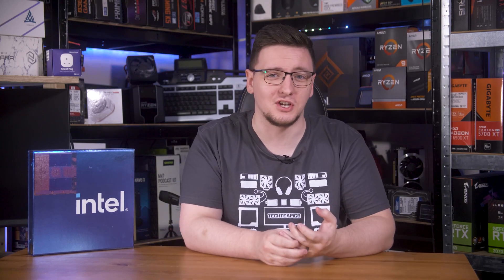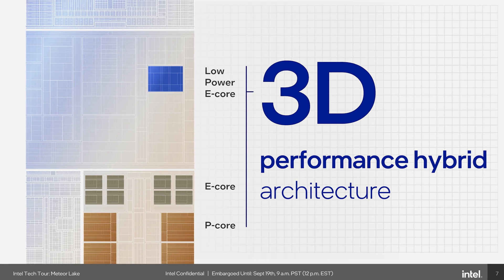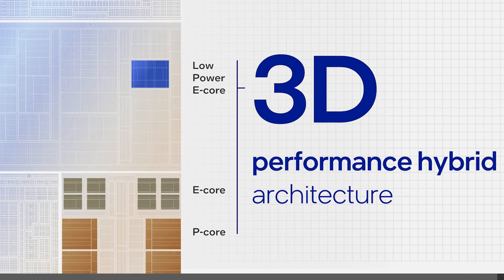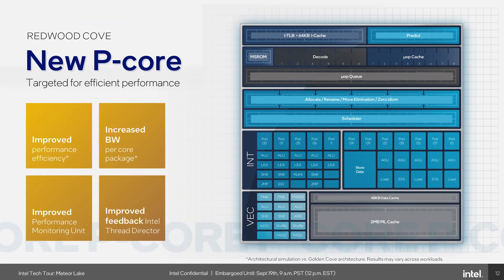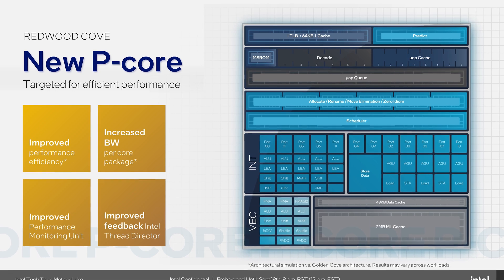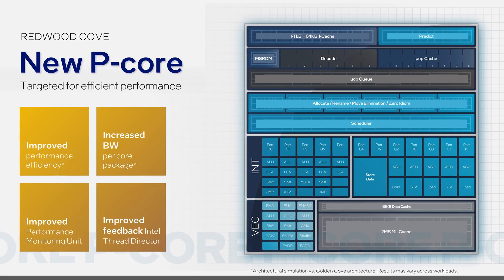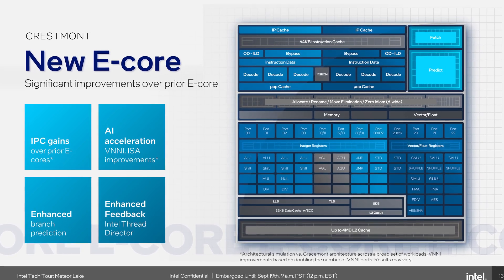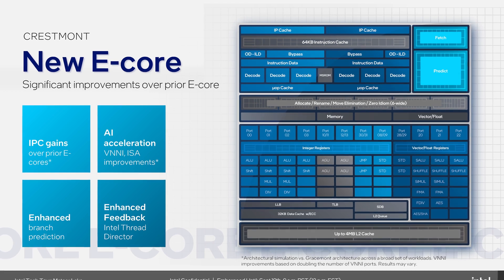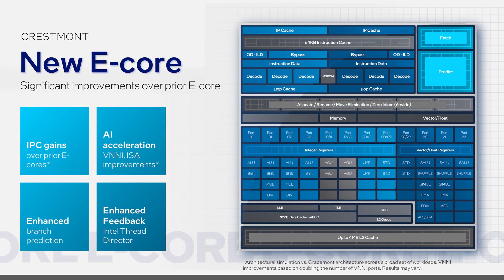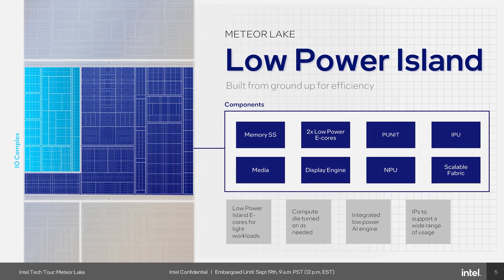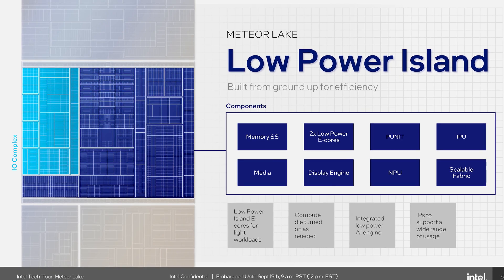These Meteor Lake chips will now have three different types of cores on board — triple hybrid chips. There are the existing P-cores, now with the new Redwood Cove architecture with better efficiency than the current Golden Cove cores, and the E-cores, also using a new architecture — specifically Cressmont — which boasts IPC gains over Graysmont, the ones in Alder Lake and Rocket Lake.